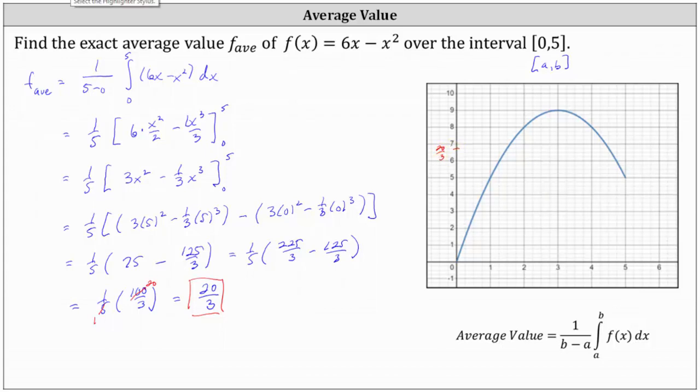From here, if we sketch a rectangle over the closed interval from 0 to 5 with a height of 20 thirds, it would look like this.